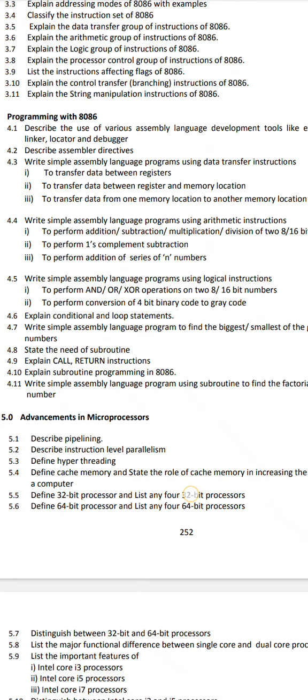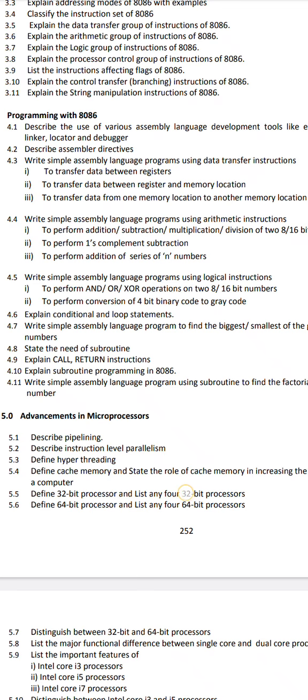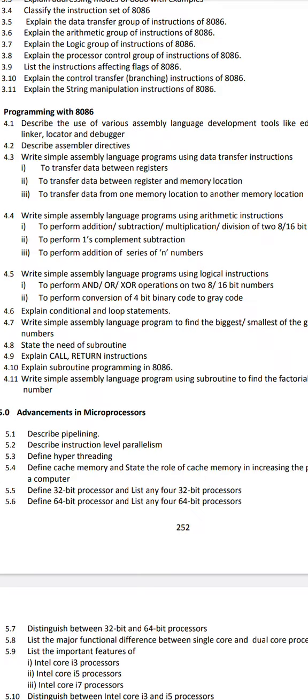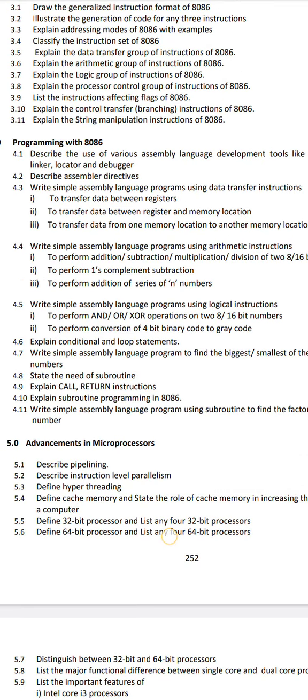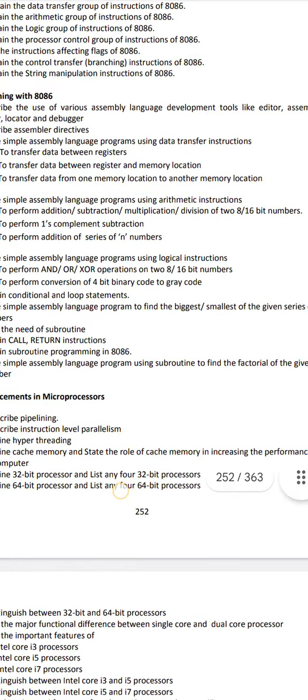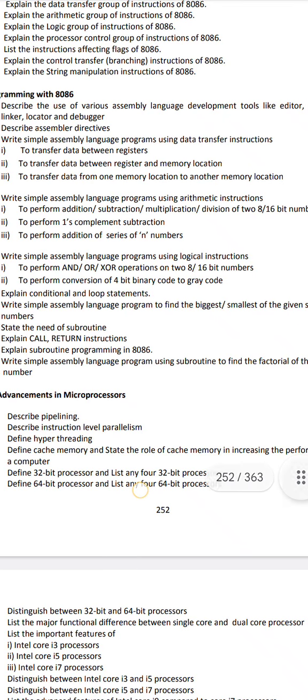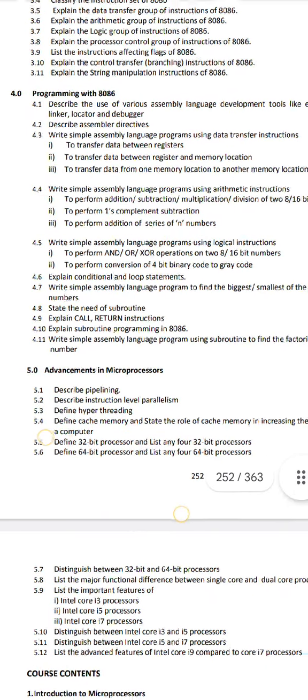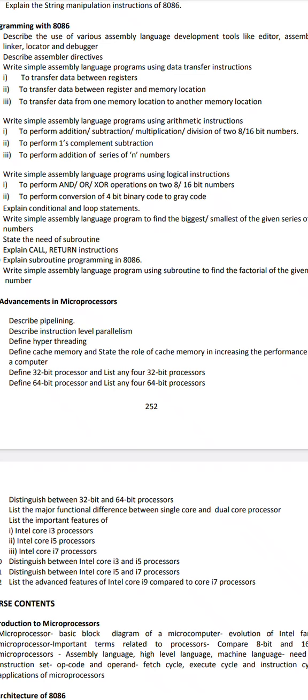4.11 - write simple assembly language program using subroutine to find the factorial. This is very important programming. You can do the same thing. That's very important. So we have to do the same thing.